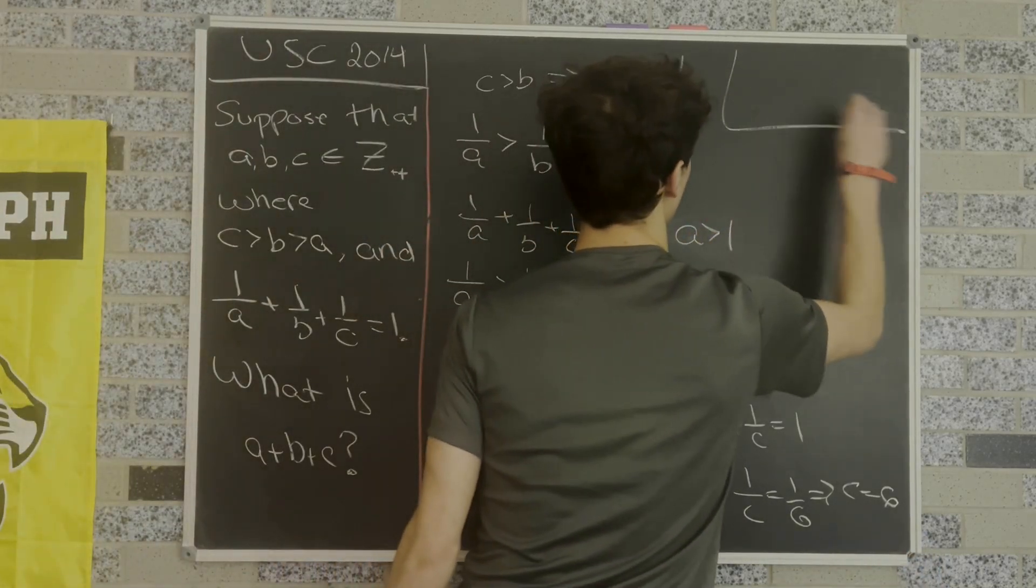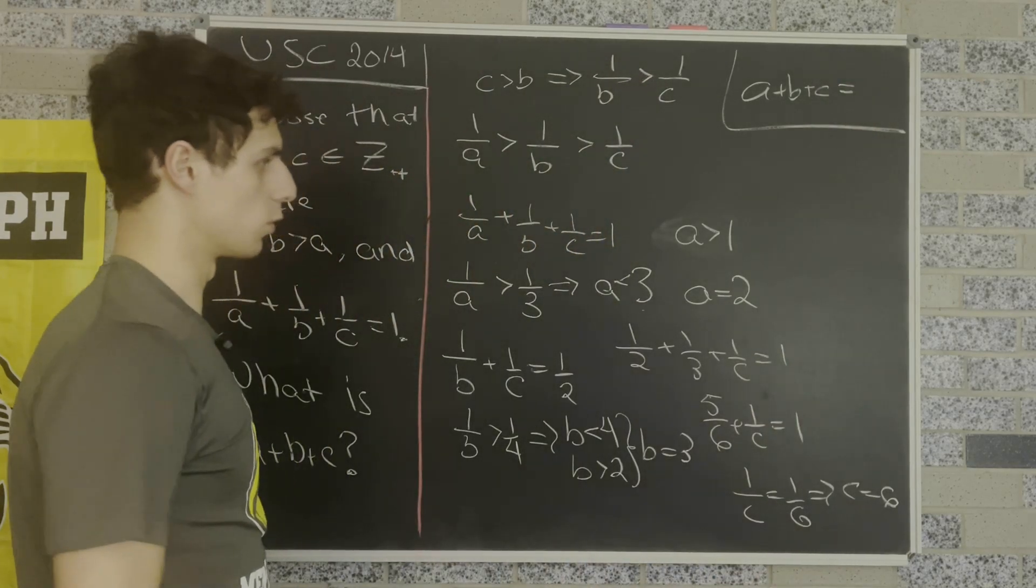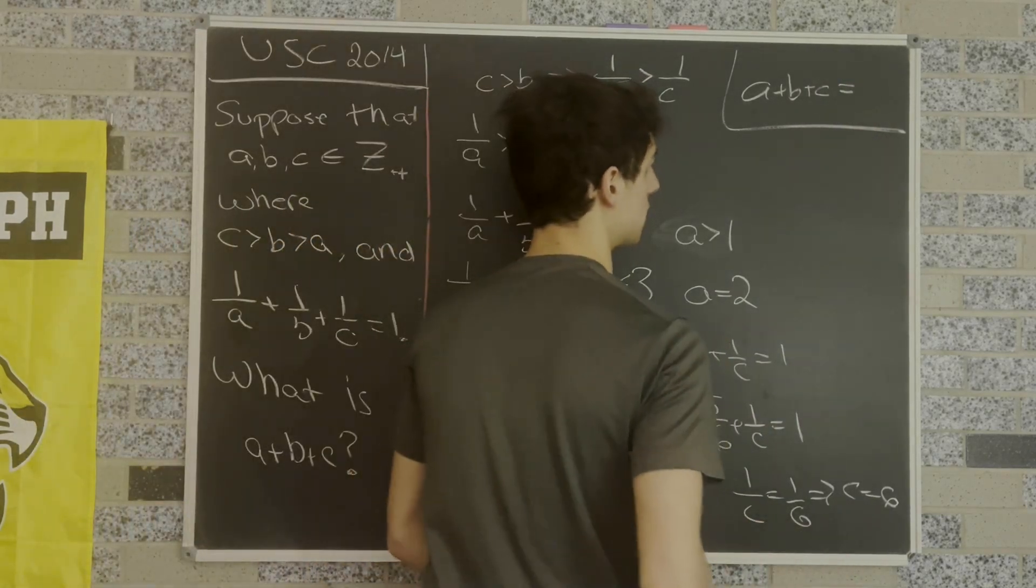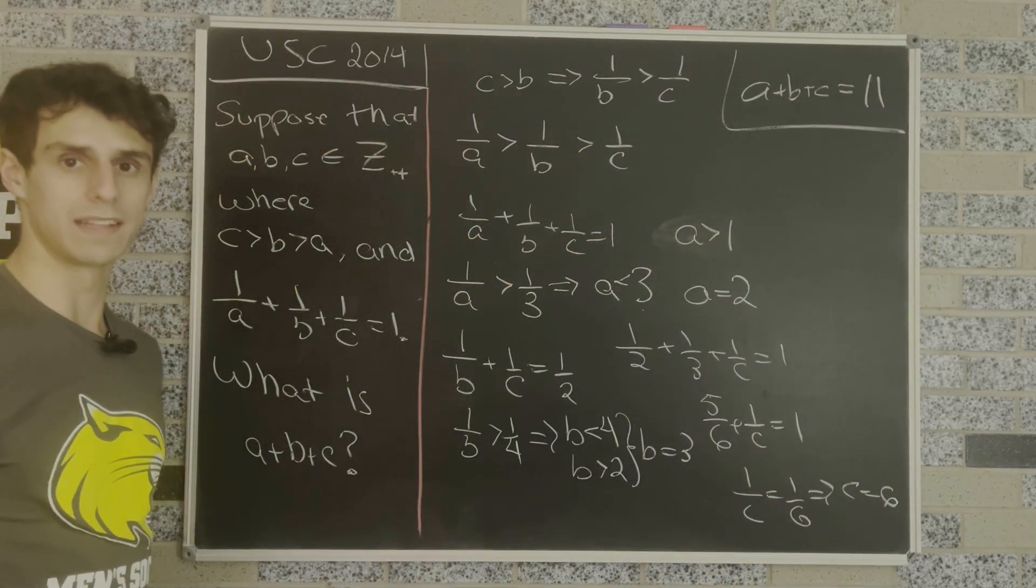So from there we can add up all of these and we get that A plus B plus C equals 2 plus 3 plus 6, and that is 11. That's our final answer and I think that's enough for now.